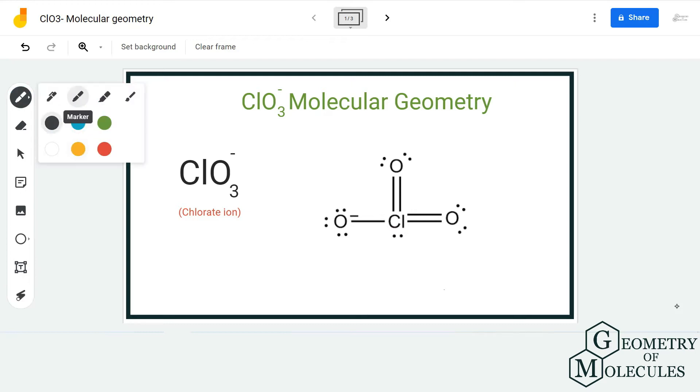To make it easy for you, I'm going to use AXE notation method to determine the molecular geometry of this molecule. There are many methods you can use to find molecular geometry, but using AXE notation is one of the quickest ways.